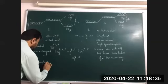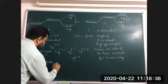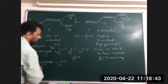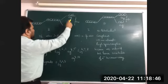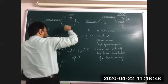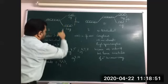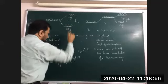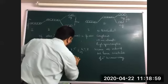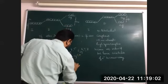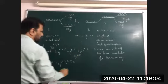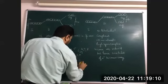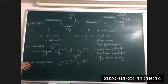In strong ligands: t2g one, two, three — since delta is more, pairing takes place in t2g. So t2g four, five, six — then next goes to eg: seven, eight. This is in the case of strong ligands.